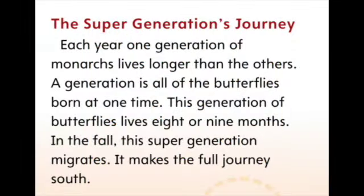The super generation's journey: each year, one generation of monarchs lives longer than the others. A generation is all of the butterflies born at one time. This generation lives eight or nine months. In the fall, this super generation migrates and makes the full journey south.